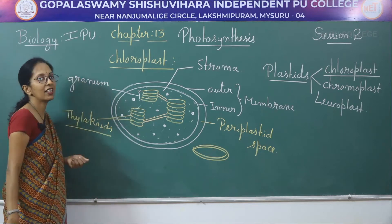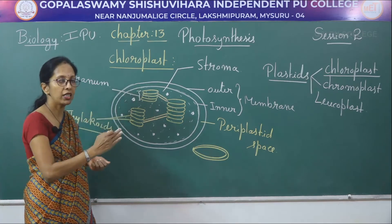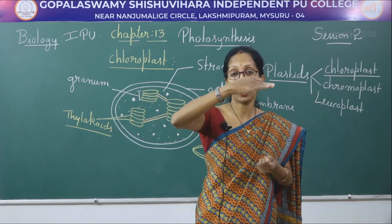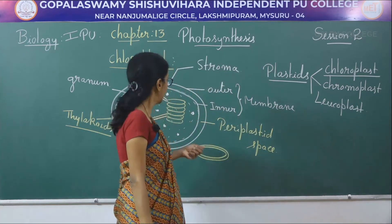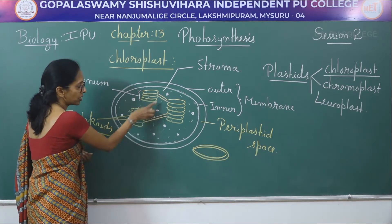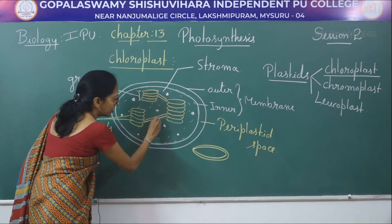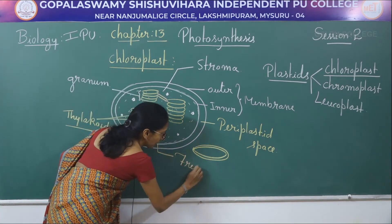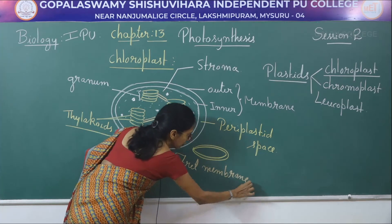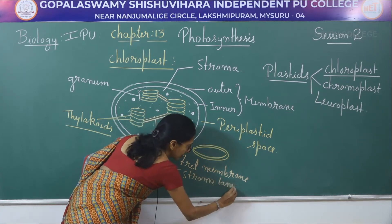Singular, one unit is called a granum. Each granum consists of 5 to 10 thylakoids placed one above the other. Between the thylakoids there is a tube-like structure called the fret membrane, also known as stroma lamella.